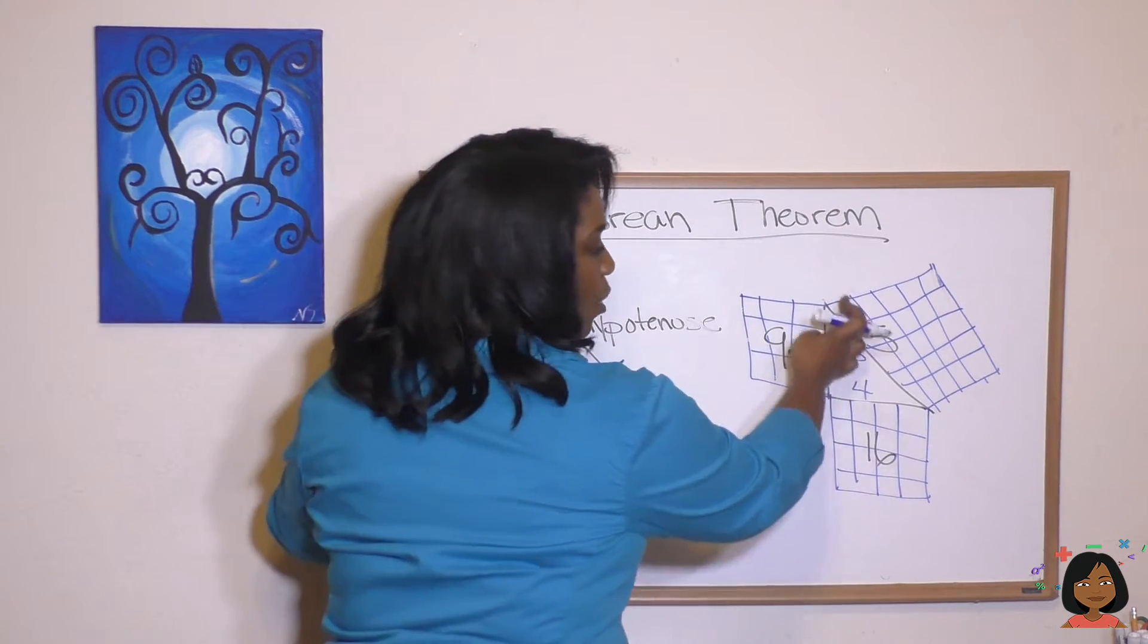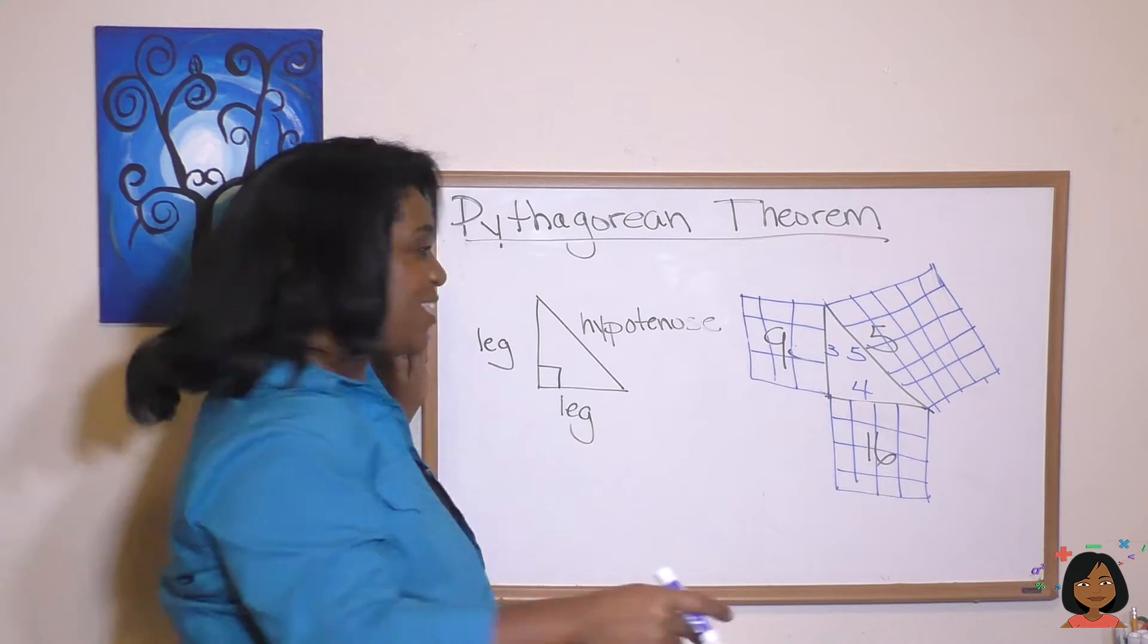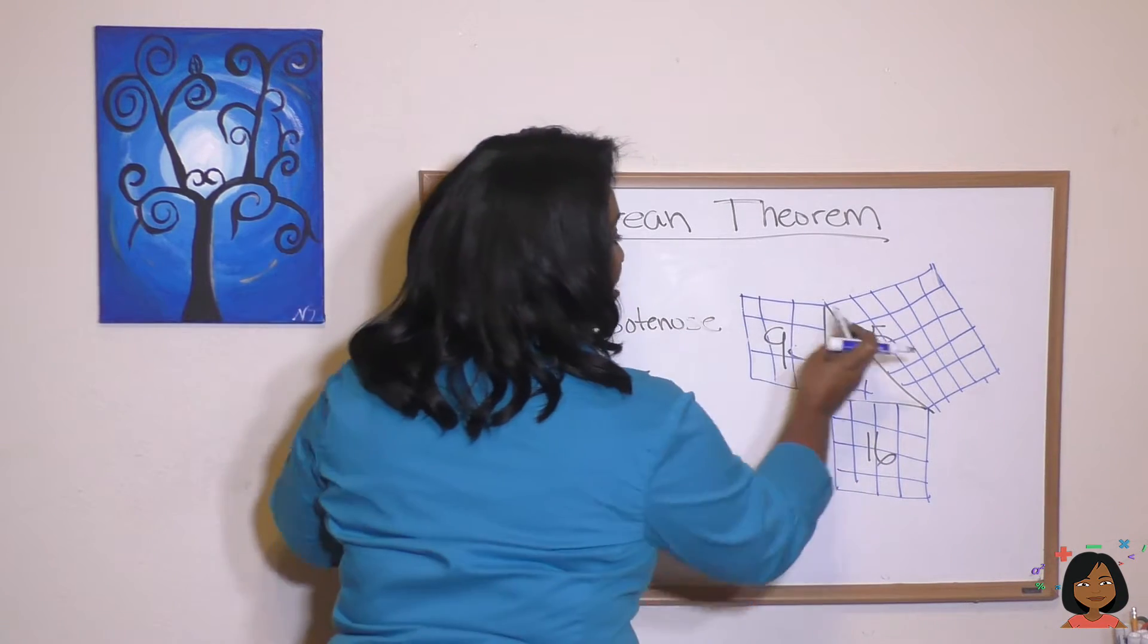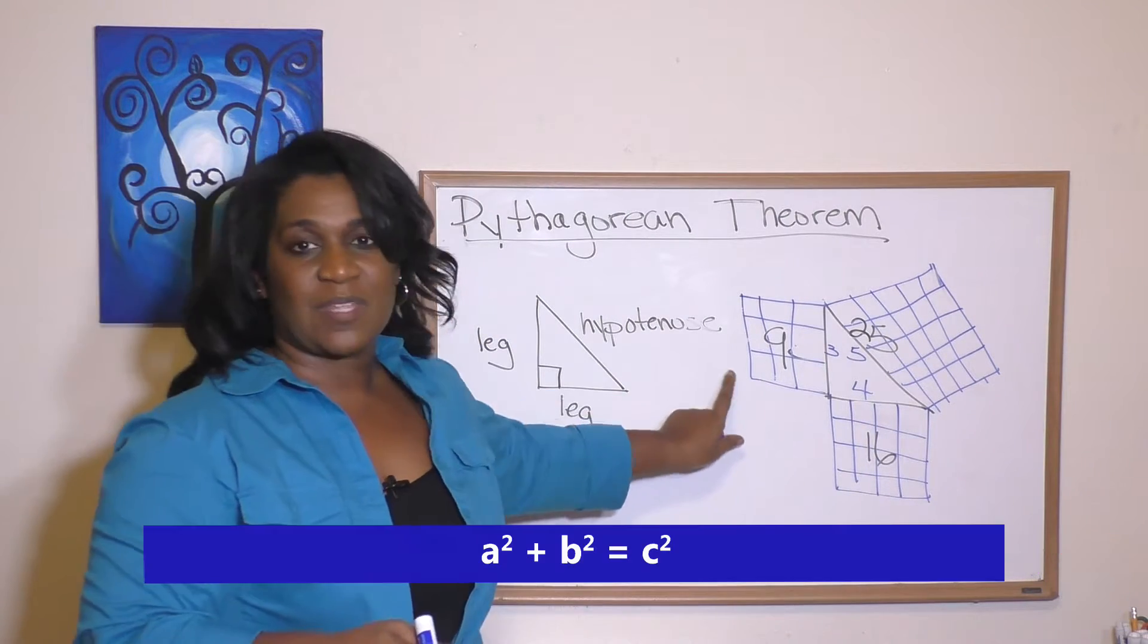So 5 by 5 square is 1, 2, 3, 4, 5, 10, 15, 20, 25, which is exactly what we said.